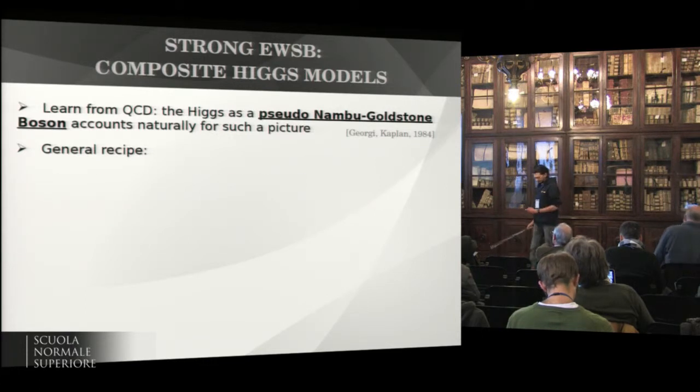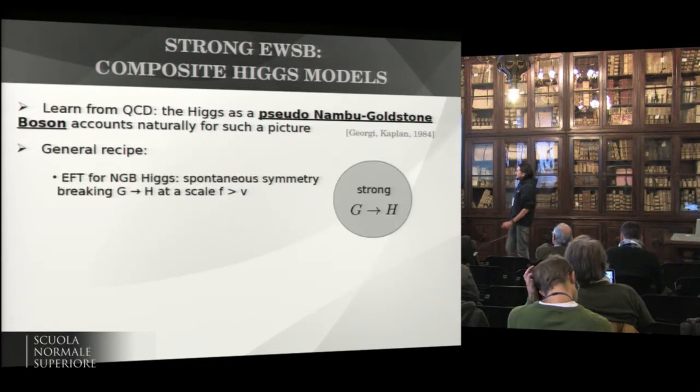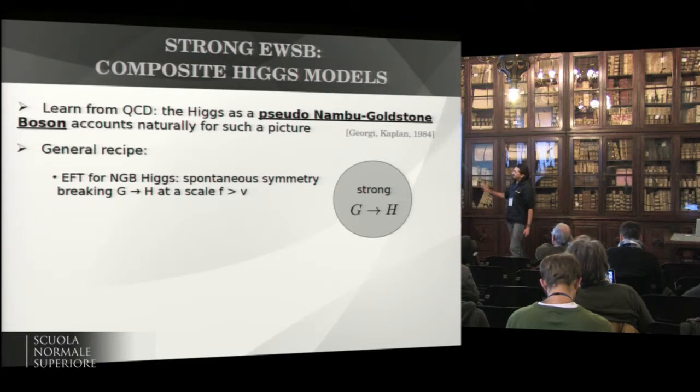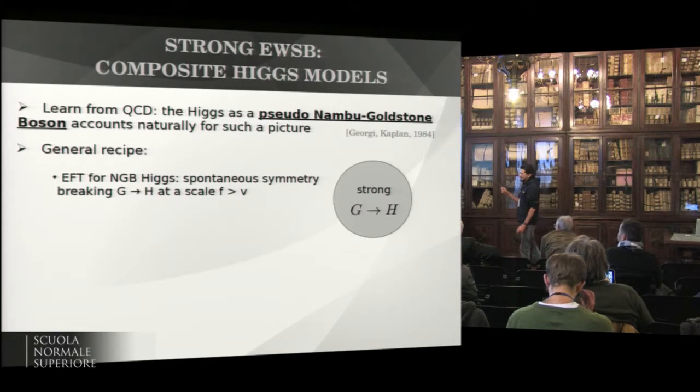The general recipe for such a construction is: consider some strongly interacting sector, which is invariant under some global G, spontaneously broken down to H at the scale F, bigger than the electroweak scale. And suppose you want to build an effective field theory for the Higgs boson as an exact Goldstone boson of this symmetry.